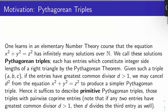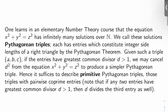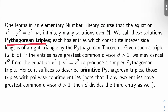What is the motivation for Fermat's Last Theorem? I think the best motivation is your elementary number theory course. You learn in such a course that the equation x squared plus y squared equals z squared has infinitely many solutions over the natural numbers. We call these solutions Pythagorean triples because each has entries which constitute integer side lengths of a right triangle by the Pythagorean theorem.